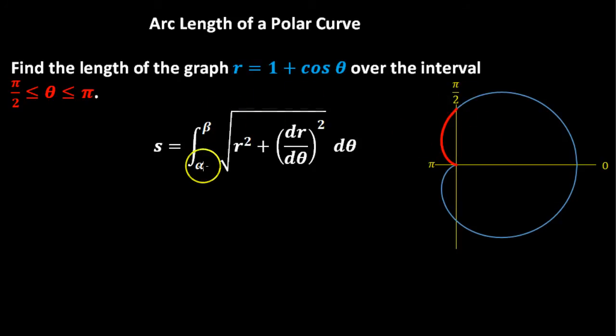Now, what are the things that we need? Well, alpha and beta, that's π/2 and π. r, that's of course 1 plus cosine of theta, and we will square that. dr/dθ, let's find that right away. The derivative of r with respect to theta equals negative sine of theta, and we will be squaring that as well. And remember, negative times a negative is a positive, so we'll just have positive sine squared of theta.